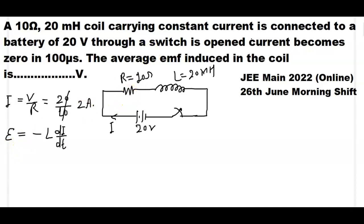So we calculate average EMF. Average EMF is equal to minus L. Inductance value is given as 20 mH. So 20 into 10 to the power minus 3.